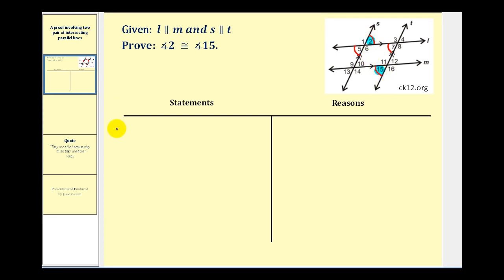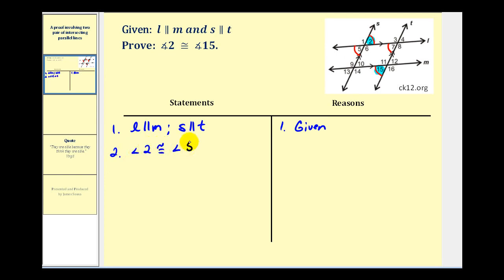Let's go ahead and write this out. Step one: state the given information — L is parallel to M and S is parallel to T. Next, angle two is congruent to angle five by the definition of vertical angles. Then, angle five and angle seven are congruent because they're corresponding angles using the parallel lines S and T cut by L.